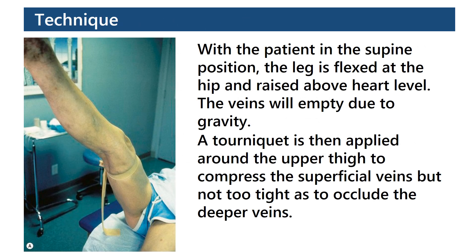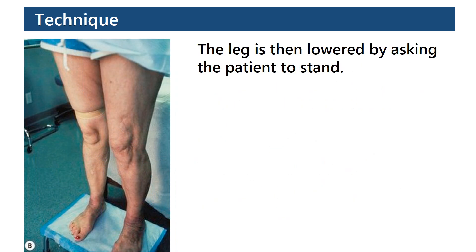Technique: With the patient in the supine position, the leg is flexed at the hip and raised above heart level. The veins will empty due to gravity. A tourniquet is then applied around the upper thigh to compress the superficial veins, but not too tight as to occlude the deeper veins. The leg is then lowered by asking the patient to stand.